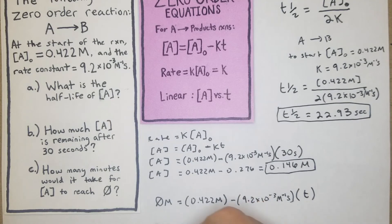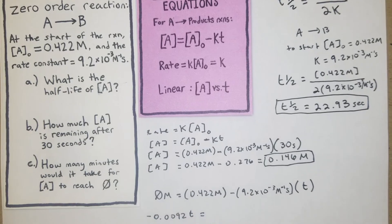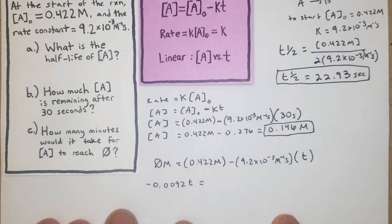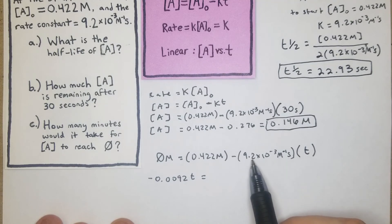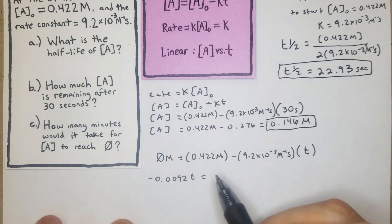Then what we can do here is we're just going to pull this down so we'll have negative 0.0092t. So we just basically moved this to that side and I'm going to scoot that down.